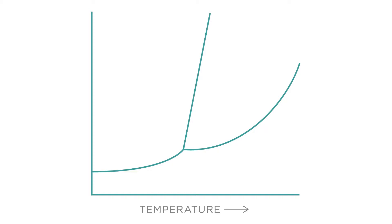We need to learn to interpret these, and first we need to know what the y and x axes represent. The x axis is temperature, going from low temperature to high temperature as we go along the axis. The y axis is pressure, going from low to high pressure. As we change the temperature and pressure, the phase of a substance will change.